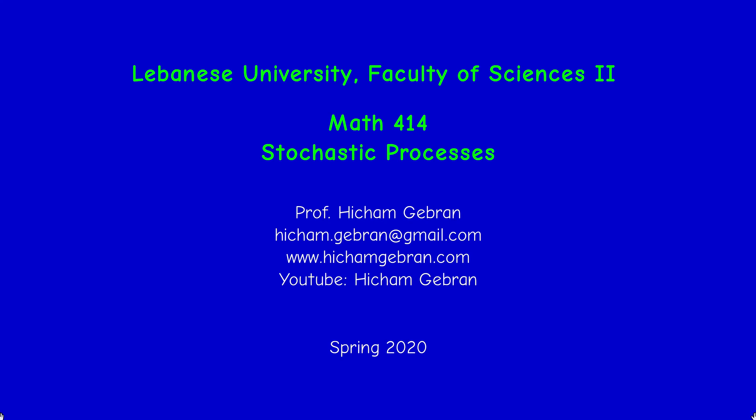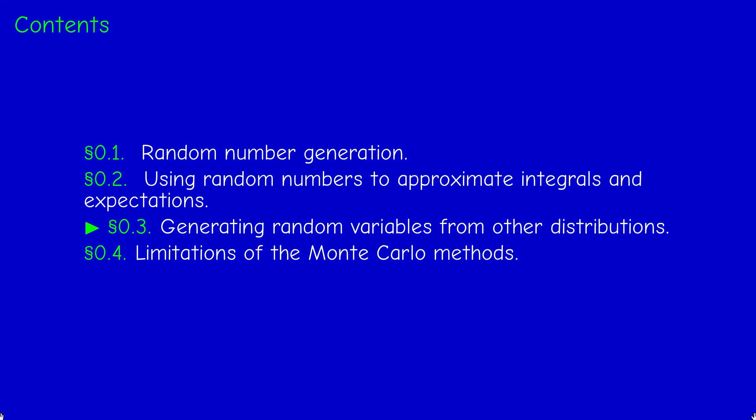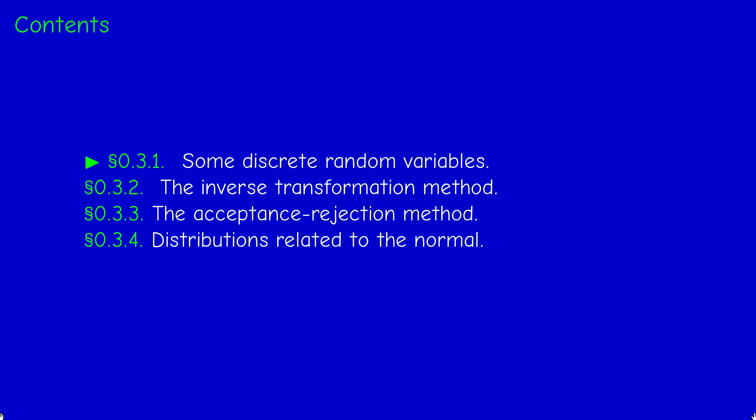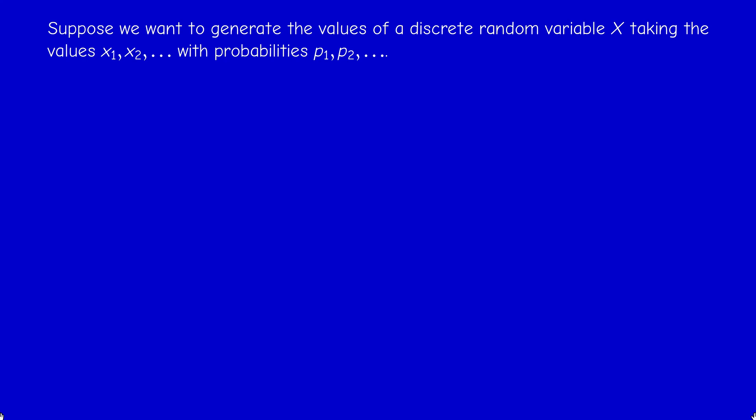Hello and welcome to this new video. Today we are going to start section 0.3 about generating random variables from other distributions. There will be four subsections. Today we are going to explain how one can generate discrete random variables, and in the next video we are going to explain some methods for generating continuous random variables. So let us start with discrete random variables.